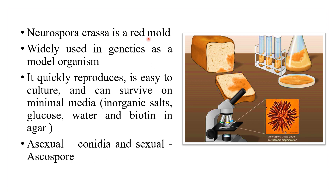Neurospora crassa is a bread mold widely used in genetics as a model organism. Beadle and Tatum chose this mold because it quickly reproduces, is easy to culture, can survive on minimal media, and can reproduce both asexually by conidia and sexually by ascospores.